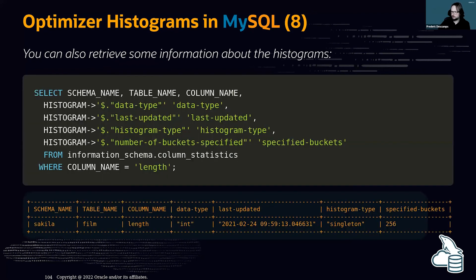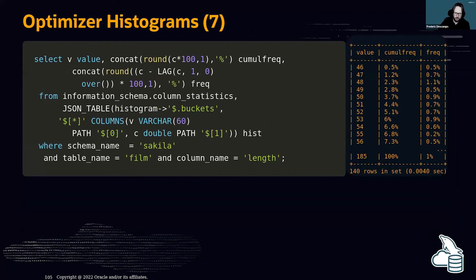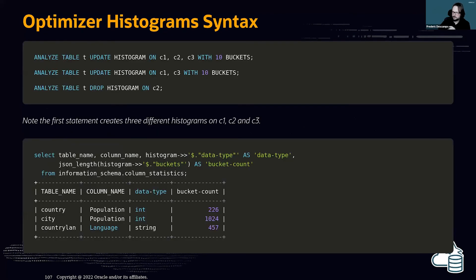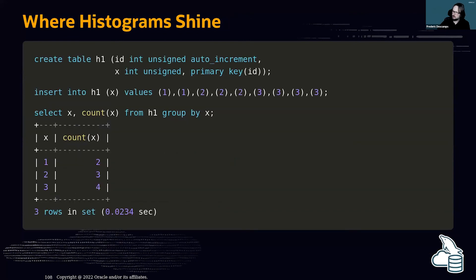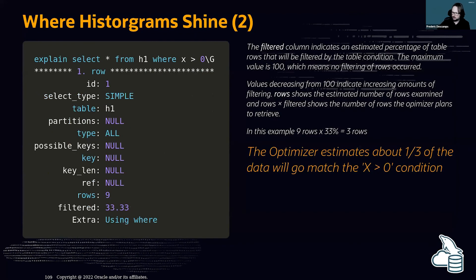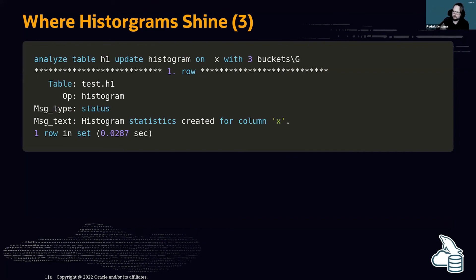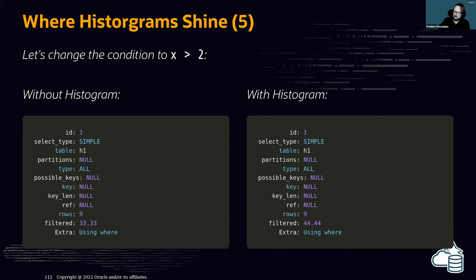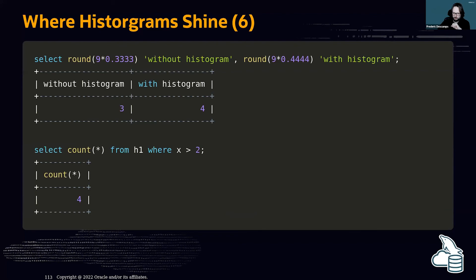MySQL allows you to find information about which tables have histograms, what those histograms look like, and how they are created. You can see the histogram data is much more precise, giving the optimizer better cardinality estimates. I'll let you check the detailed examples in the slides after the talk.